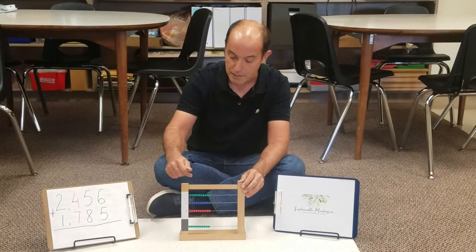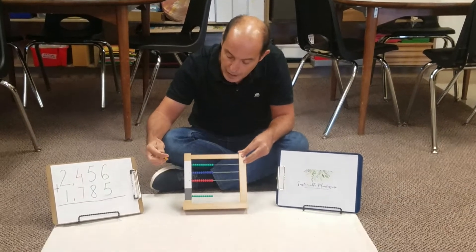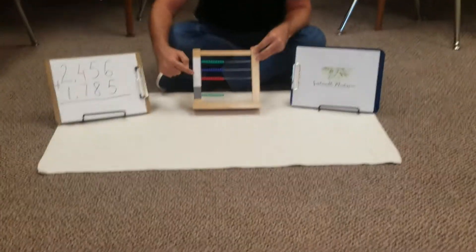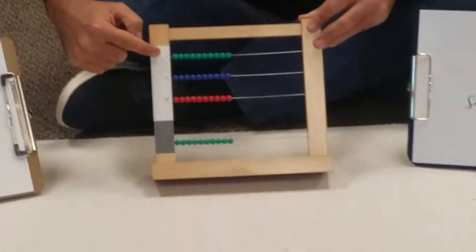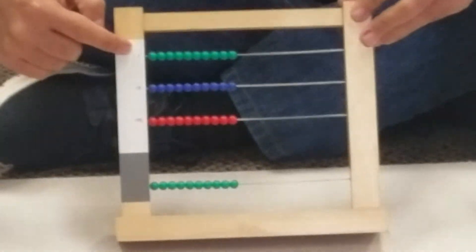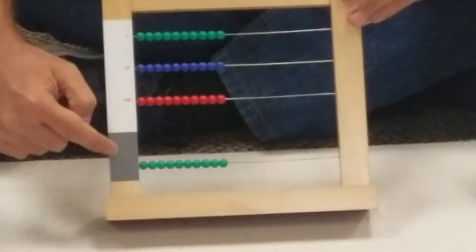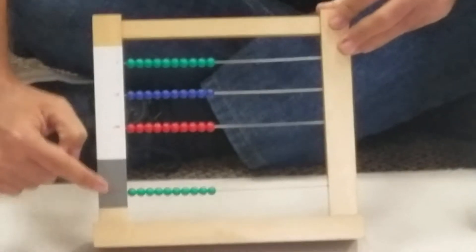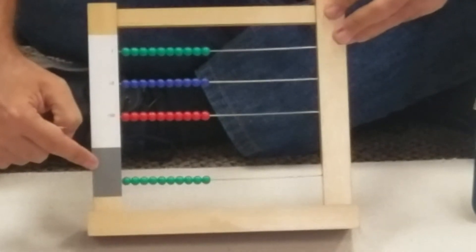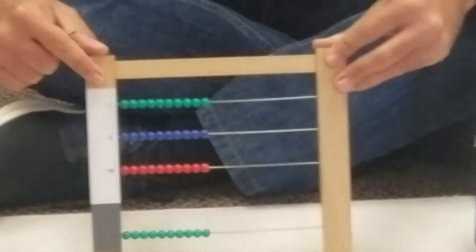Today we have the bead frame. On the side we have the white, which represents the simple family - the units, the tens, and the hundreds. Here in grey we can see the units of thousands that started on the family of the thousands. So this is the small bead frame.